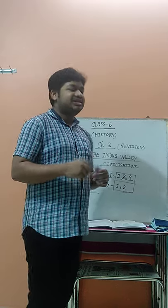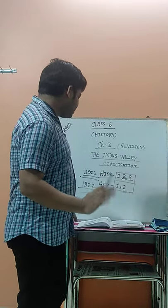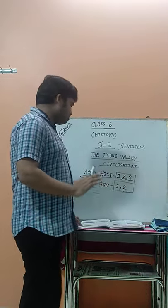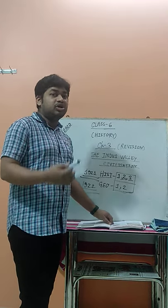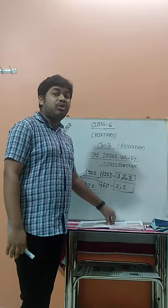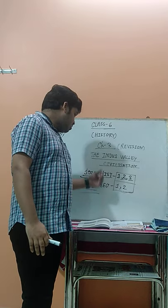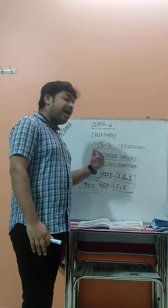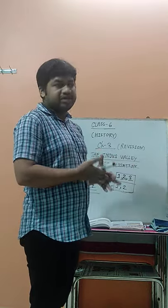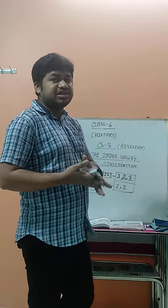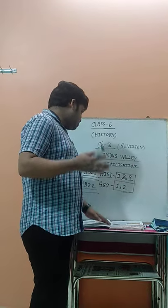Now some other important points: what is the meaning of Mohenjo-daro? The meaning of Mohenjo-daro is 'Mound of the Dead.' Mohenjo-daro is located beside the river Indus, and Harappa is located beside the river Ravi.